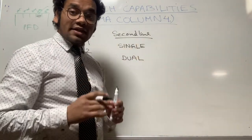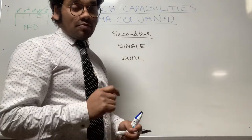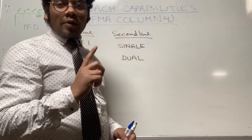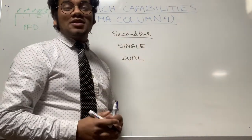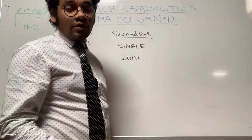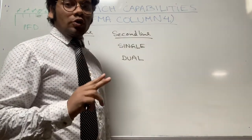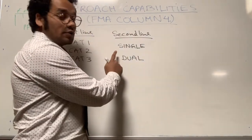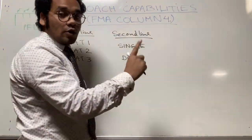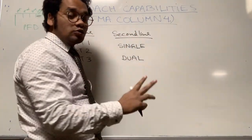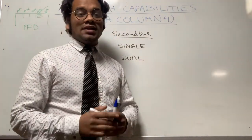What is the meaning of SINGLE and DUAL? SINGLE means CAT 3 capability is available with fail passive condition, meaning with one autopilot engaged. DUAL means CAT 3 capability is available with fail operational condition, meaning with two autopilots engaged. So in SINGLE, one autopilot is engaged; in DUAL, two autopilots are engaged.